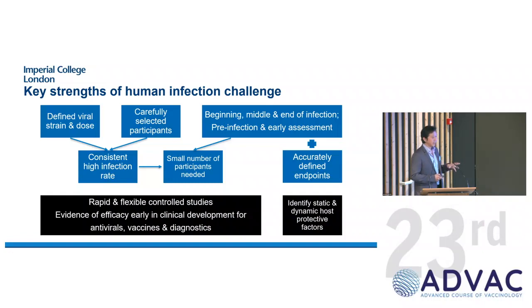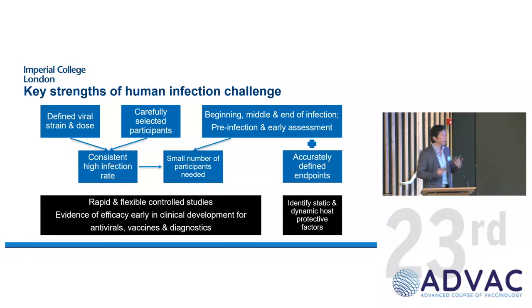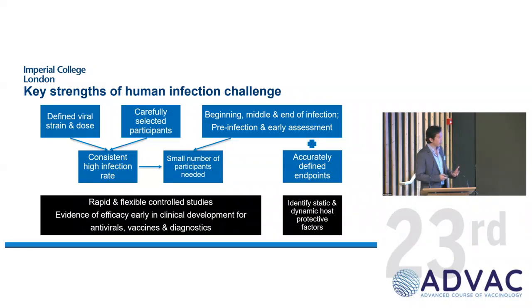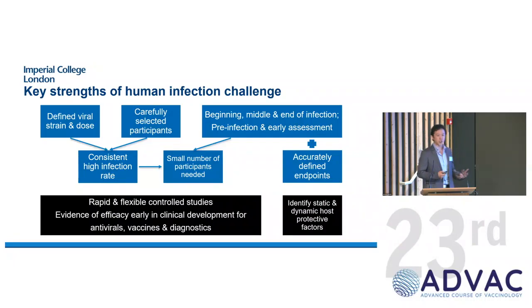From the point of view of understanding pathogenesis, correlates of protection, and mechanisms of protection, the other important point is that we're able to assess individuals at the beginning, middle, and end of infection — including the pre-infection period and the often short period between virus exposure and development of symptoms, which you can't really capture in any other study design. The very accurately defined endpoint coupled with the very accurately defined stimulus allows us to identify not only static protective factors like antibodies, but also dynamic host protective factors like cytokines, chemokines, and T-cells and other cellular protective mechanisms.